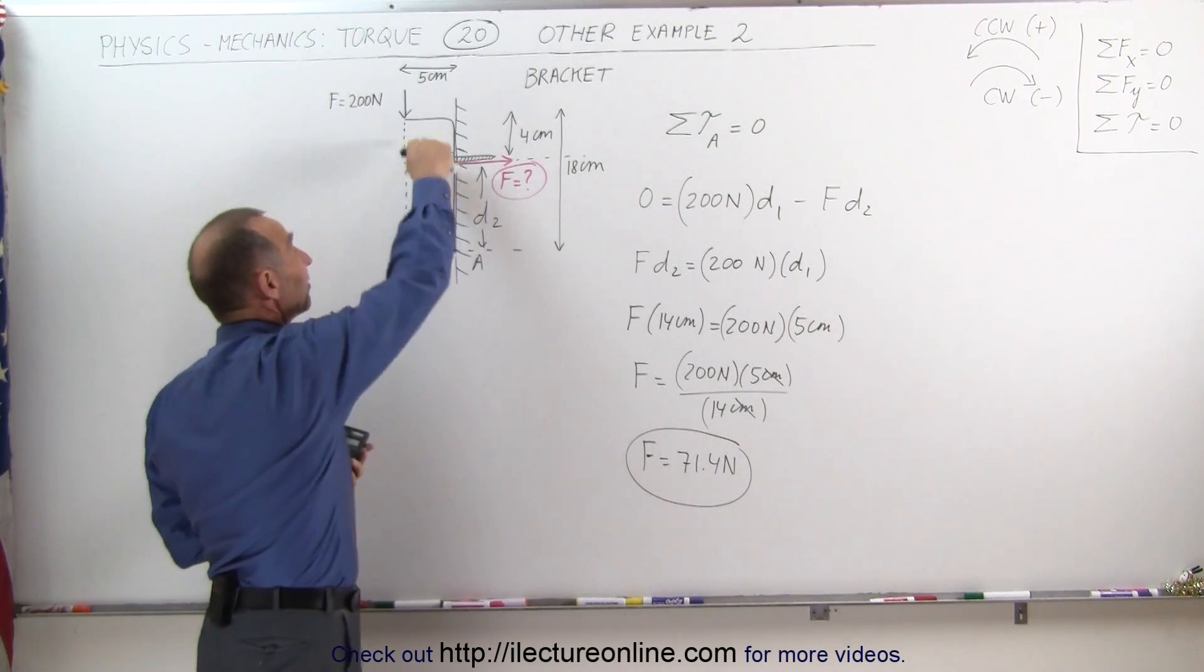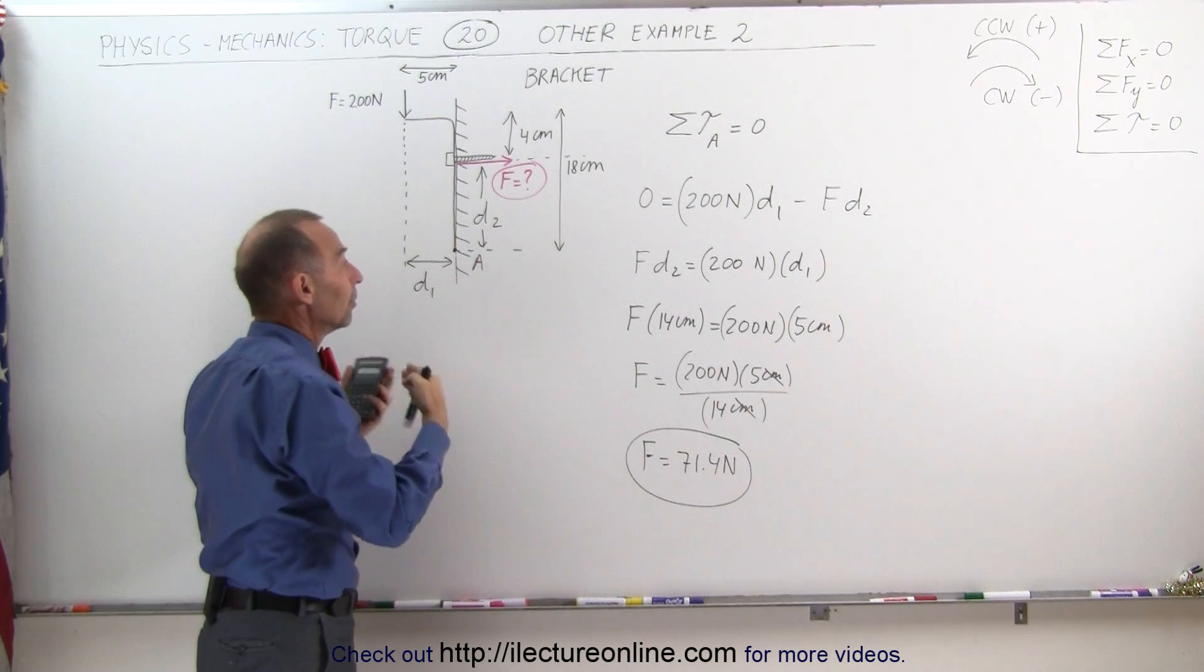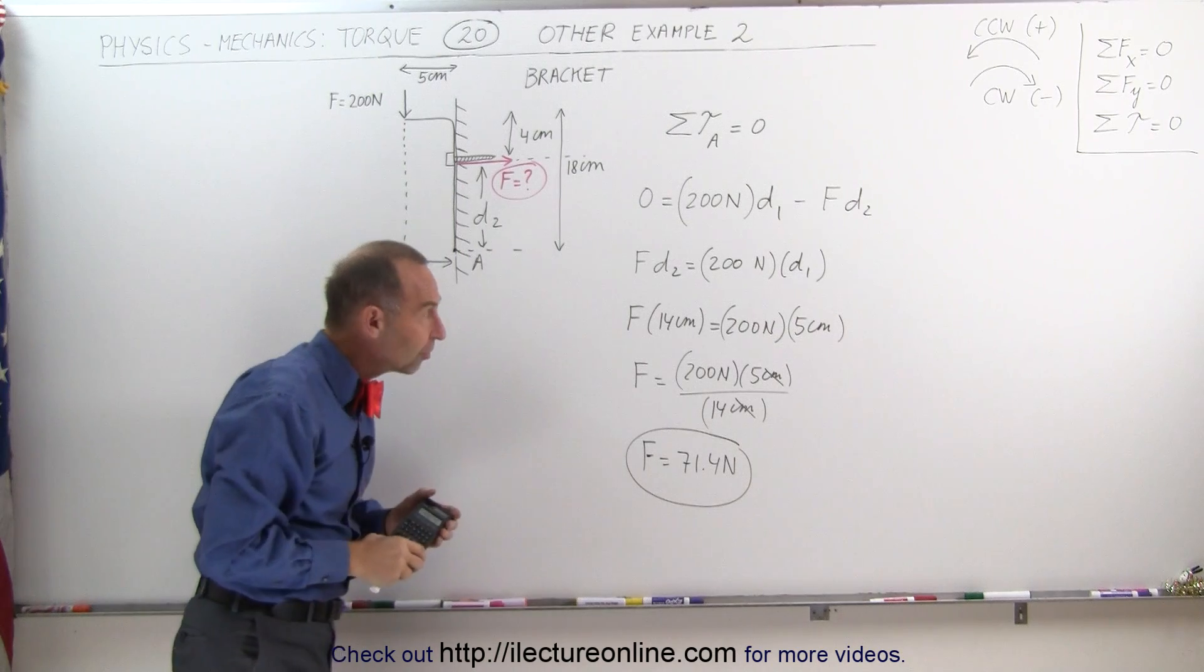One of the reasons why they make this end of the bracket so long is to increase that length here, so we have a bigger moment arm about which the force acts, so we have a better torque distance here.